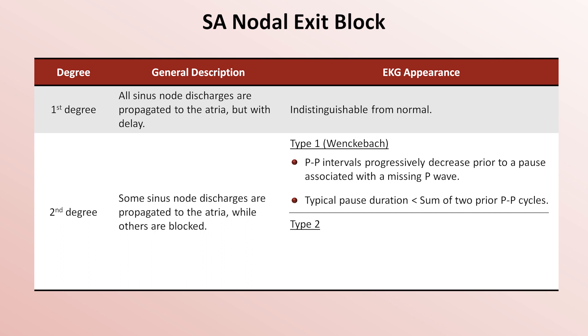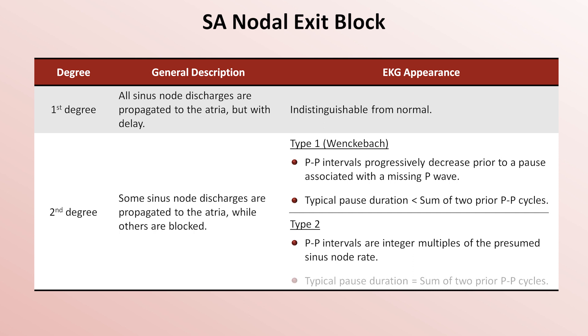In type 2 second degree block, the p-p intervals are integer multiples of the presumed sinus node rate. In this case, the typical pause duration is equal to the sum of the two prior p-p cycles.